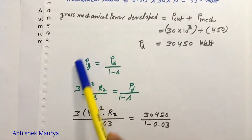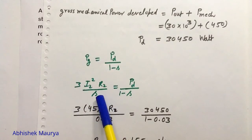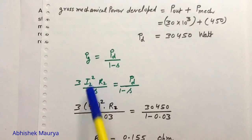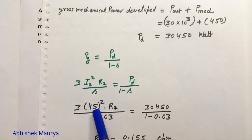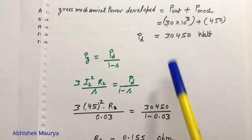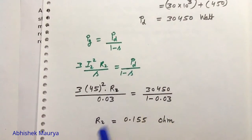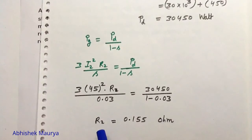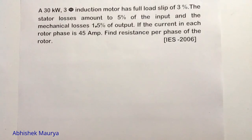Using the expression for Pg, which is 3·i2²·r2/s, with i2 equal to 45 ampere, Pd equal to 30,450 watts, and slip equal to 0.03, you can easily find the rotor resistance per phase, which is 0.155 ohm. In this way we have completed this problem.